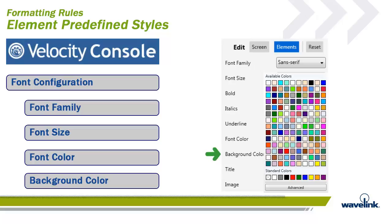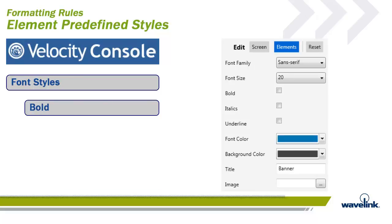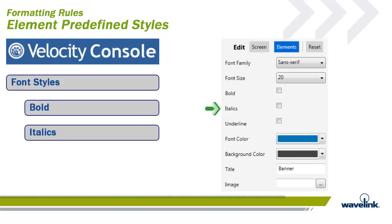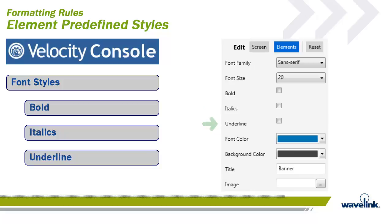The font background color specifies the background color of the element. Be aware that if there is not enough contrast to the font color, the text might not be readable. Once the font family, size, and color are configured, you can also configure the style of the font. The bold option bolds the element text. The italics option italicizes the element text. The underline option underlines the element text. By default, none of these options are selected, so they must be user configured.